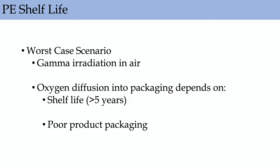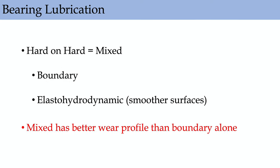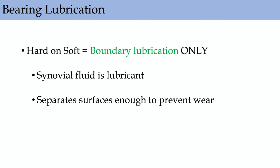PE shelf life: the worst case is gamma radiation in air. You want low shelf life with manufacturing in an inert, oxygen-free environment. For bearing lubrication: for hard-on-hard surfaces like metal-on-metal or ceramic-on-ceramic, you have both boundary and elastohydrodynamic lubrication. For hard-on-soft, you only have boundary lubrication where synovial fluid is the lubricant, just enough to separate the two bearing surfaces.